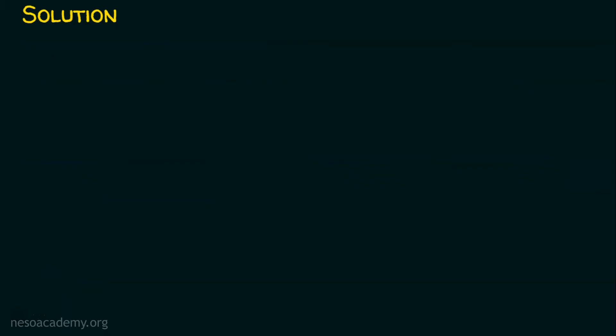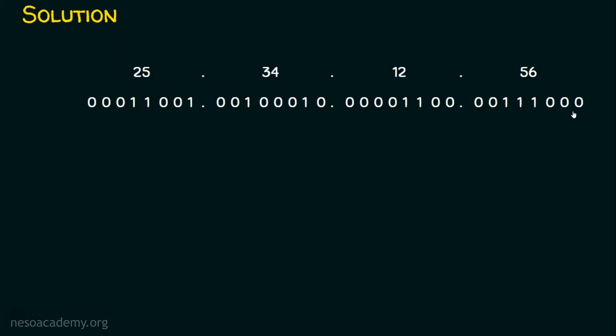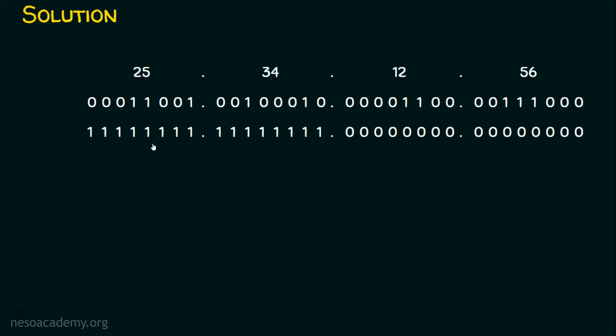First we need to take the IP address given in the question, which is 25.34.12.56. We need to convert this IP address into binary. Now we need to bring in the subnet mask. Slash 16 means we fill in 16 ones and then the remaining zeros. The equivalent of slash 16 in decimal is 255.255.0.0.